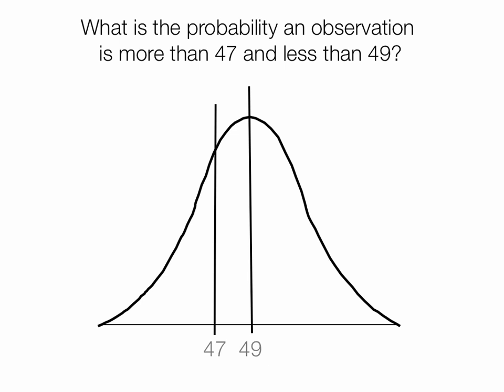What is the probability an observation is more than 47 and less than 49? Put our z-scores right there at the bottom. Remember, the z-score at the mean is 0. It would be this area right here. So if you look up 1 in your table in your book, you'll find it has 0.34 as the value, or 34%.